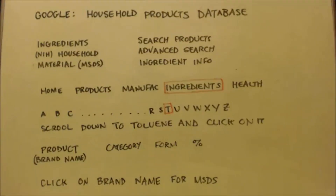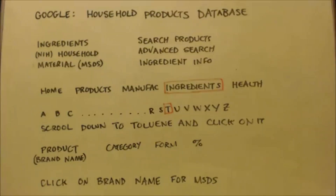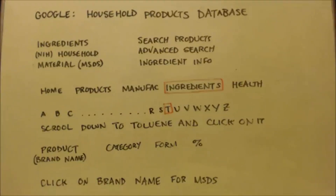That's basically the whole thing of how you look stuff up. Now that I'm on a computer, this is how I find chemicals. So if I wanted something else — like sodium acetate — I'd go to that site, hit ingredients, hit S instead of T, scroll down to sodium acetate, click on it, and it'll give you a list of brand names. I want a high percentage.